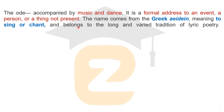The name comes from the Greek word 'aden', meaning to sing or chant. Ode belongs to the long and varied tradition of lyric poetry — poetry associated with music, dance, and emotion, with rhythm and meters. It is a formal address believed to be sung or chanted.